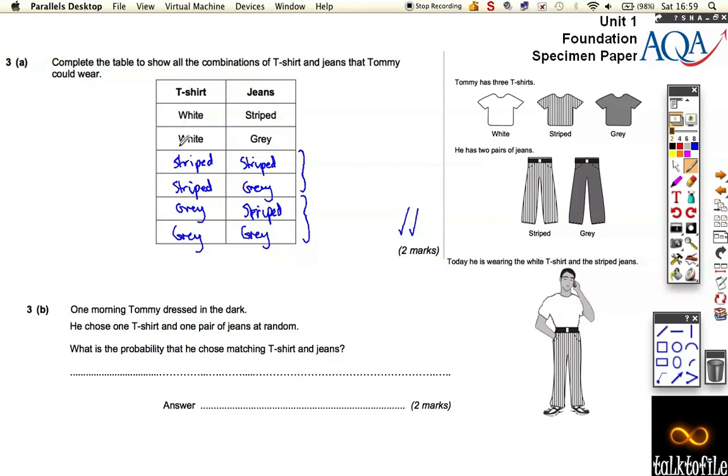Well the only matching ones is a striped with a striped and a grey with a grey, they're the only matching ones. But there's one, two, three, four, five, six different options. So the probability is just two out of six which you can simplify to a third but for probability you don't need to.